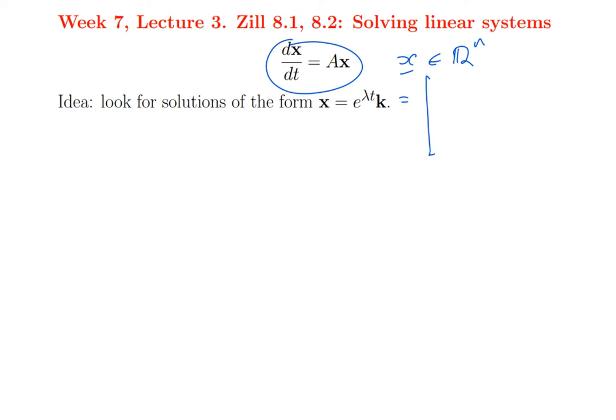So this is going to look like, as a vector, it's going to look like e to the lambda t times the first component of k, e to the lambda t times the second component of k, e to the lambda t times the nth component of k. So they're exponential functions, but they'll all have the same exponential constant. So let's try this solution and substitute it in and see what we get.